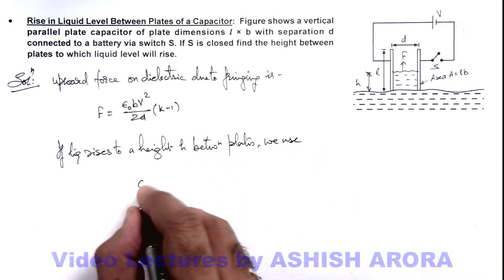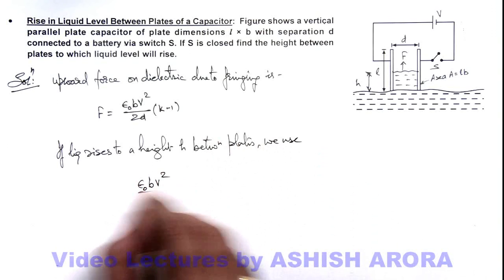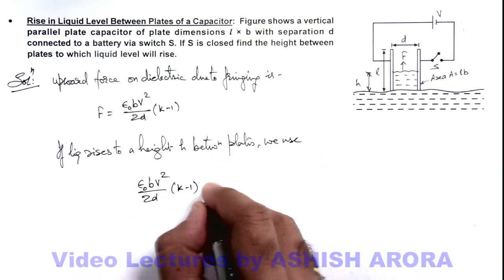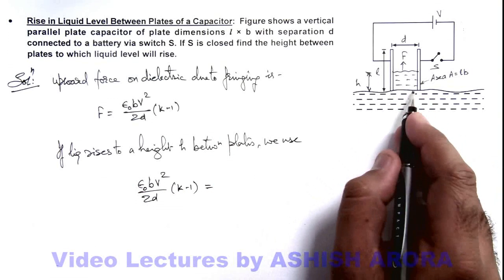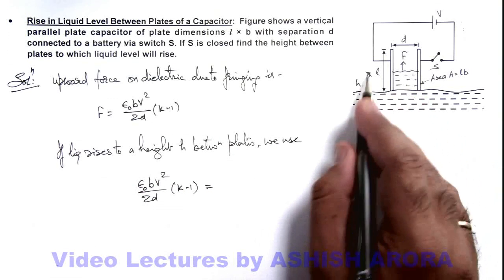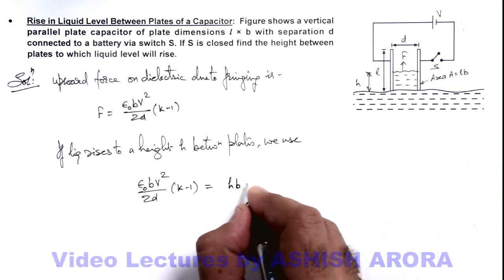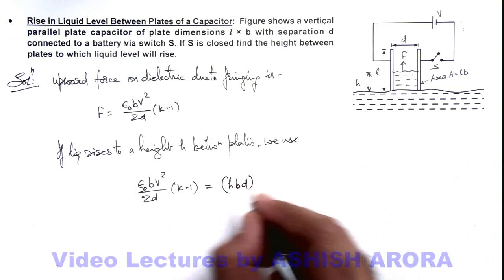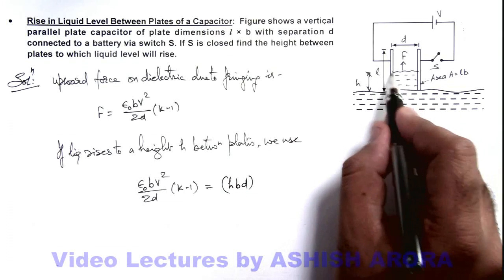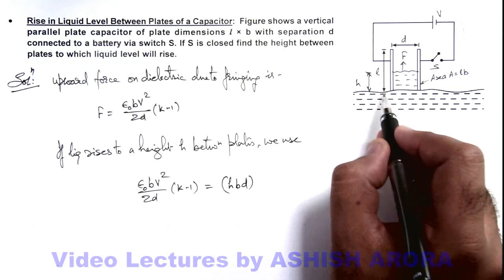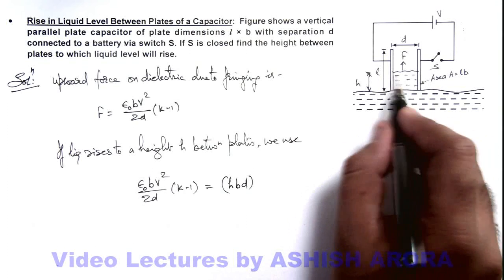Here the force ε₀bV²/(2d) multiplied by (k-1) should balance the weight of this liquid. Its volume up to a height h can be written as h·b·d. This is the volume of the liquid because b is the width of the plate, h is the height to which it is raised, and d is the separation.